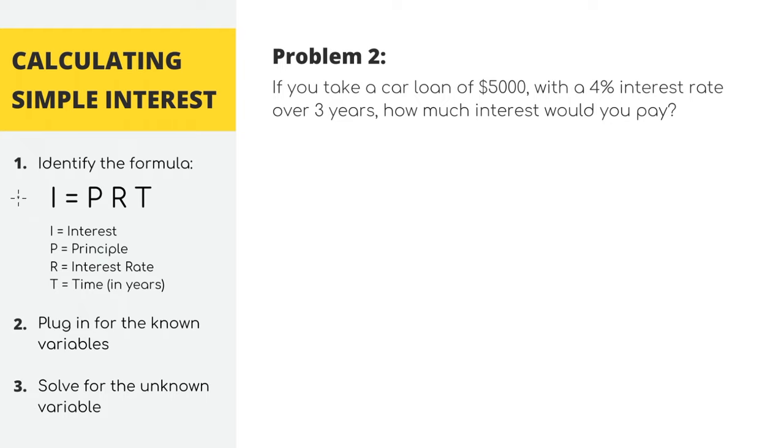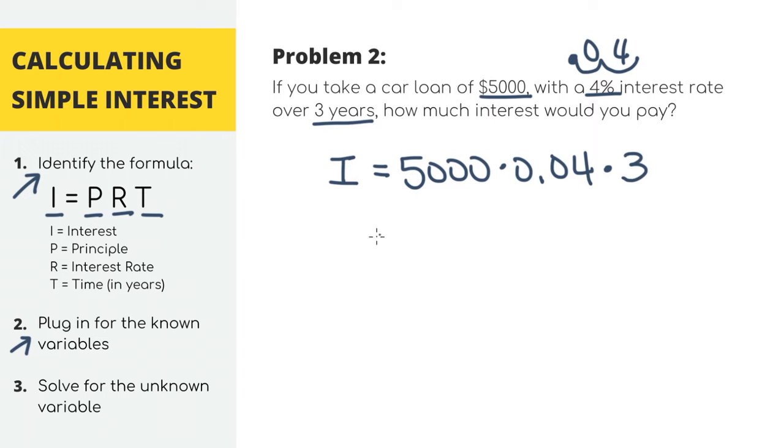We're going to use the same equation, I equals PRT. We're still trying to find I, which is the interest we're going to be paying. P is the principal, which is the amount of money we're borrowing, which is $5,000. R is the rate, at 0.04. And T is time, which is three years. When we multiply it all out, our interest is $600, which is our final answer to this problem.